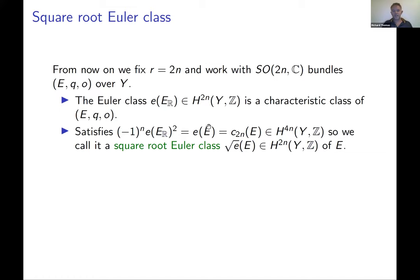This Euler class, roughly speaking, has its square equal to the Euler class (top Chern class) of the original complex bundle, up to a sign. That sign comes in because the orientation of the real bundle — like e₁ ∧ e₂ ∧ … — gives an orientation of the complexified bundle that looks like e₁ ∧ e₂ ∧ … ∧ ie₁ ∧ ie₂ ∧ …, and moving those i's through wedge products produces a sign.